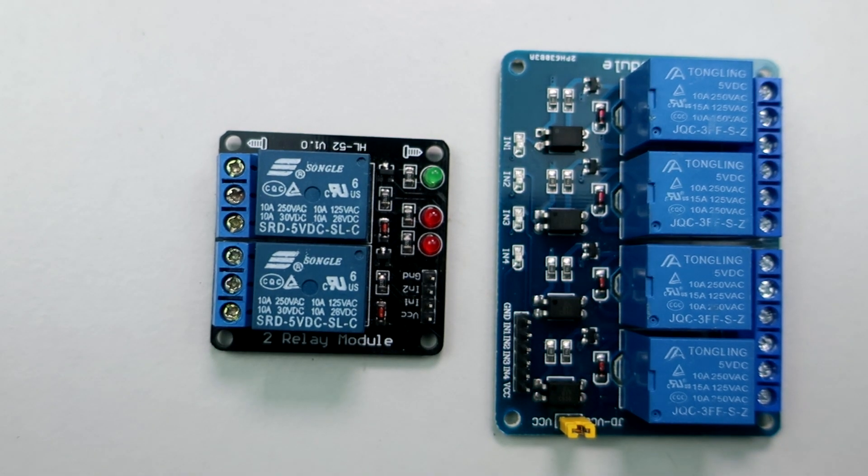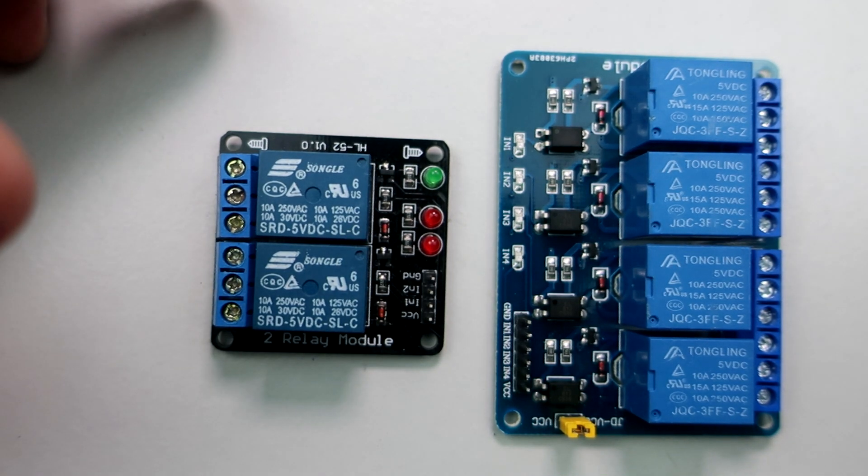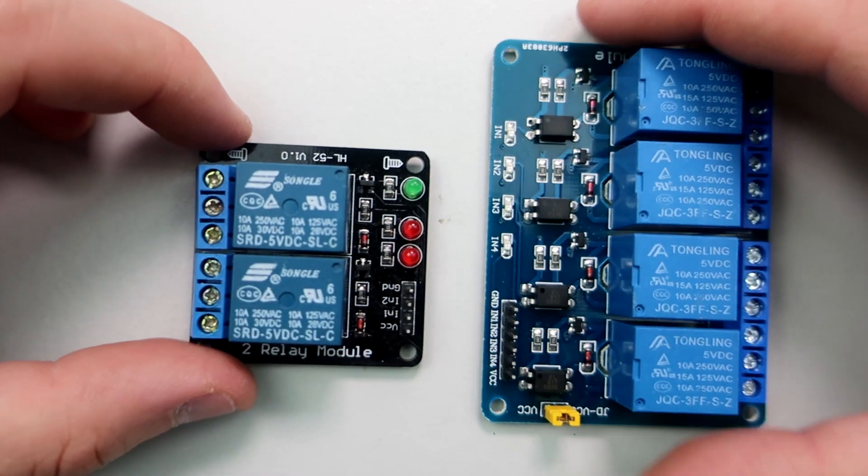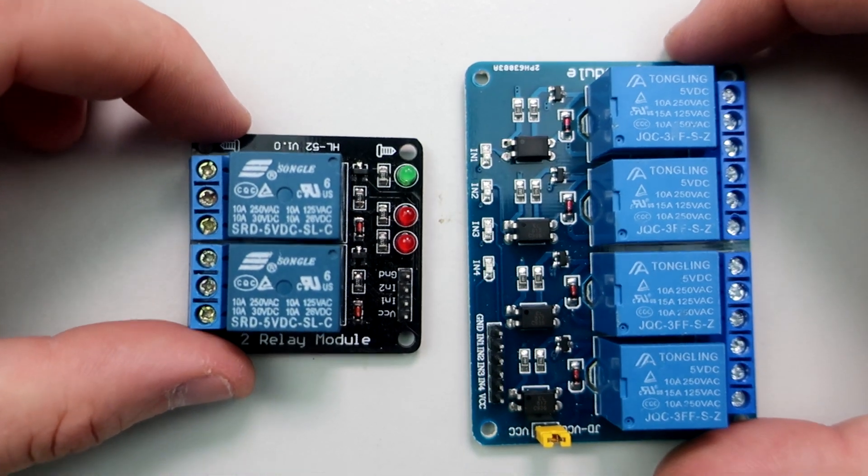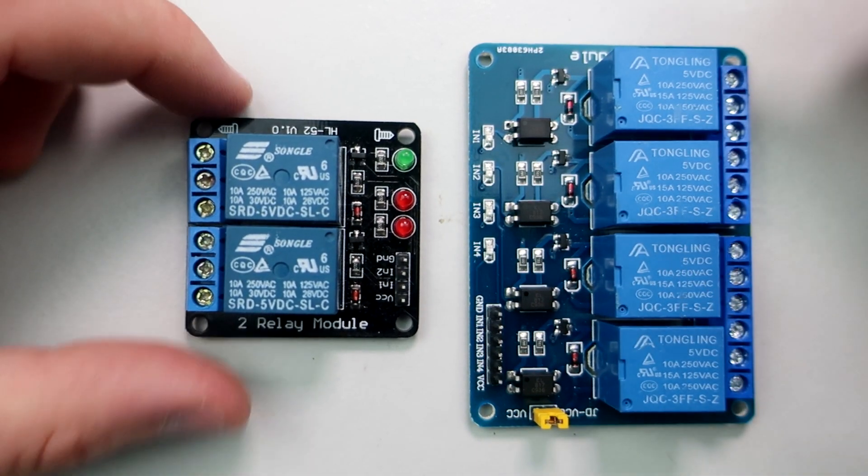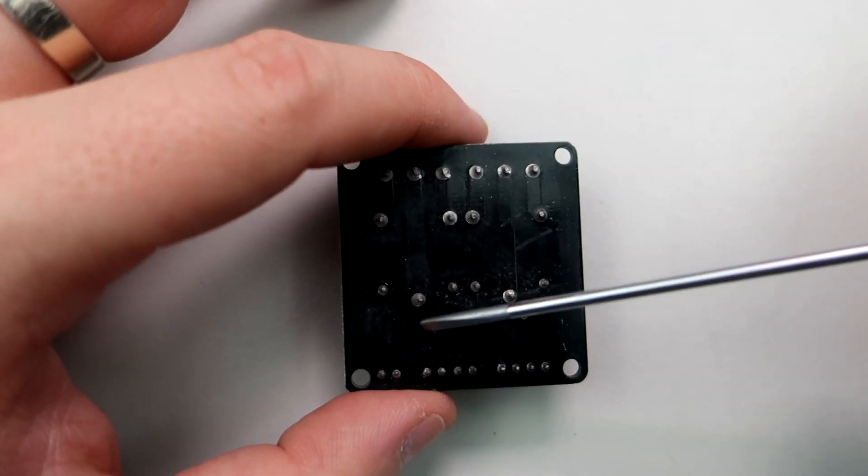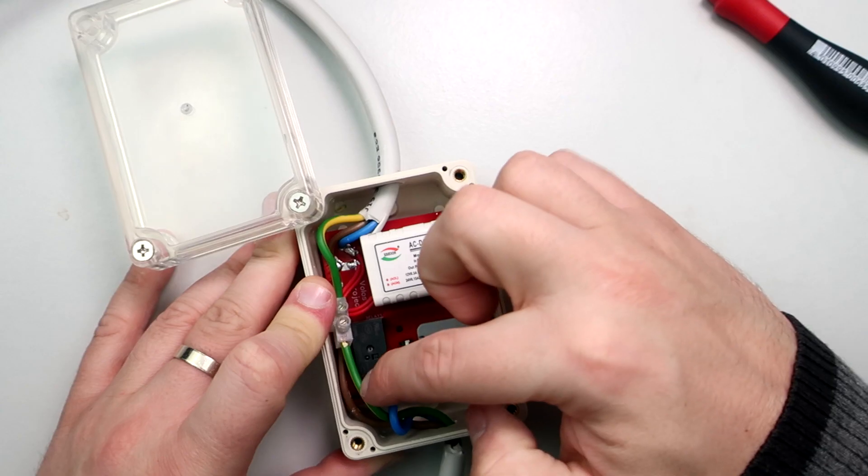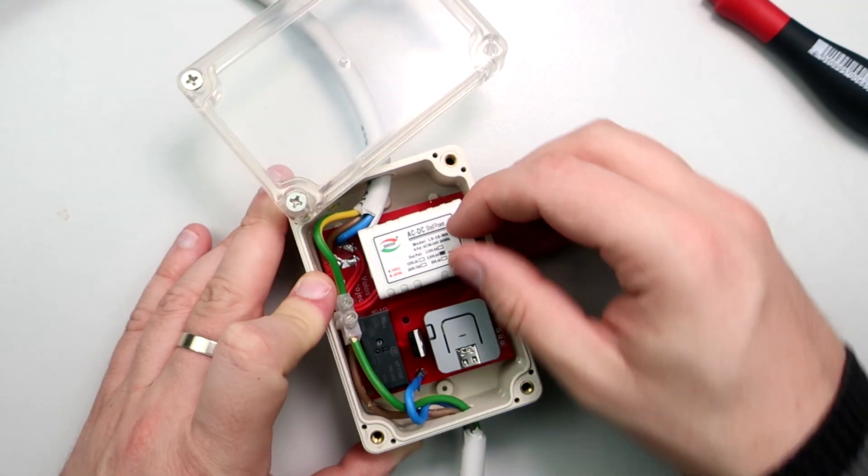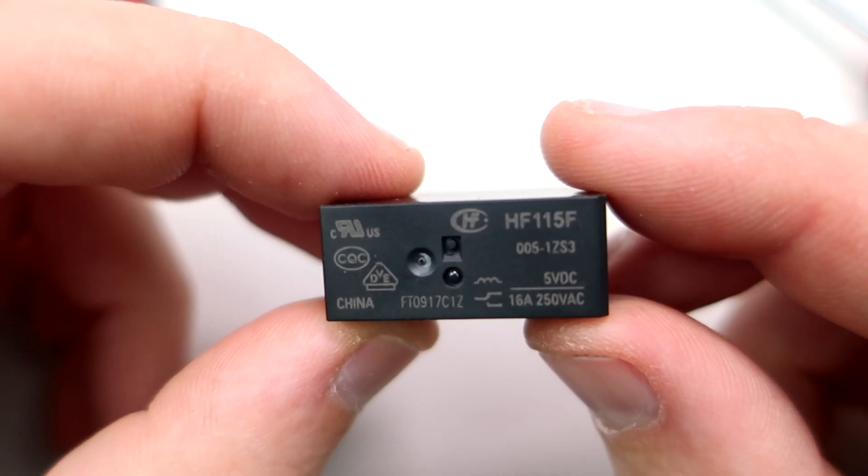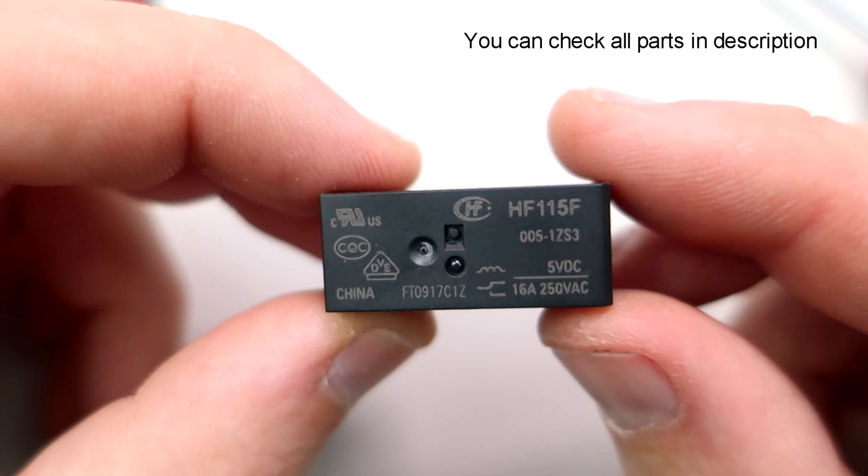To control an AC device, a relay is needed. I have many relay modules, but they can handle only 5 or 10 amps. And I'm not sure these PCB tracks can handle such current. So I will make my own relay module and I will use this 16-amp relay.